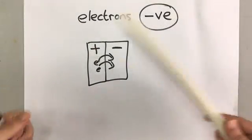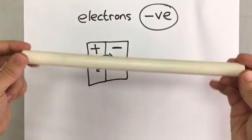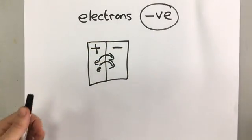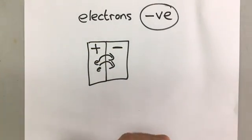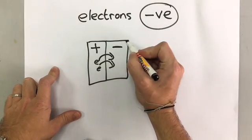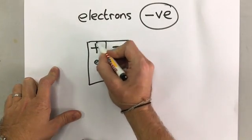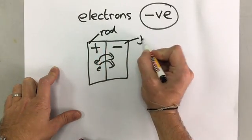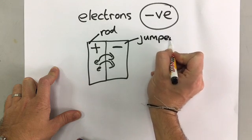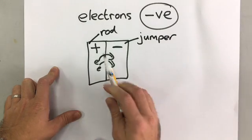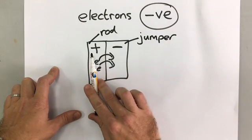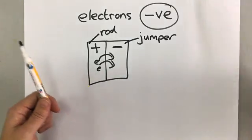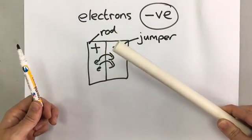What is happening in that example is the electrons from the rod are being transferred to the jumper. The electrons are being transferred away from the rod into the jumper, so the rod is left with a positive charge.